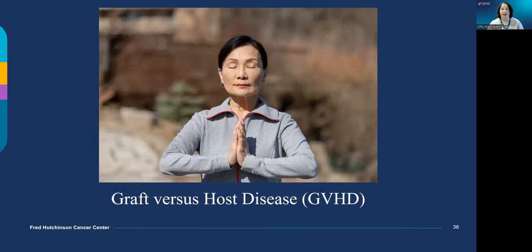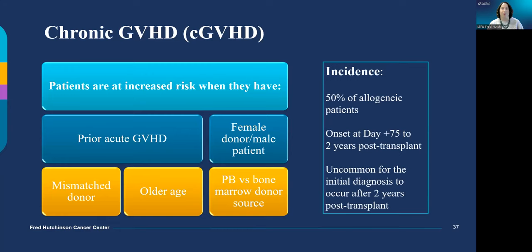In this class, we will be talking about graft-versus-host disease after allogeneic transplant. Allogeneic transplant patients are at risk for chronic graft-versus-host disease, especially if you have one or more risk factors, such as already having acute graft-versus-host disease, being a male patient with a female donor, or having a mismatched donor. About half of our allogeneic patients will develop some degree of chronic graft-versus-host disease.